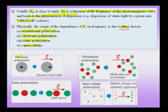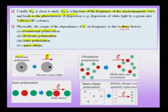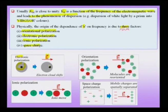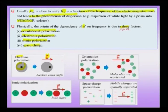In electronic polarization, because of the presence of an electric field — and in the case of a wave, this electric field is an oscillating quantity, since an electromagnetic wave is coupled electric and magnetic oscillations propagating through space — the center of mass of the electron cloud is shifted with respect to the center of mass of the nucleus. This shift implies that a net dipole is created in the material, and this is what we call electronic polarization.